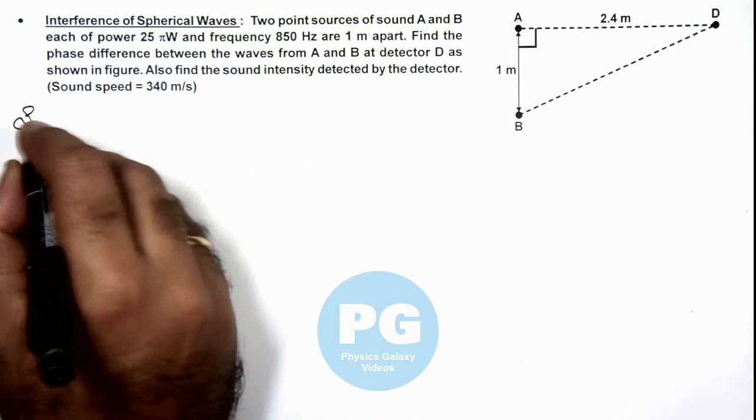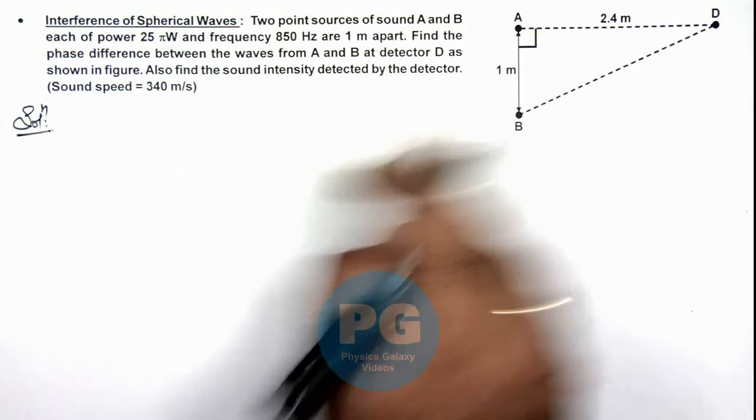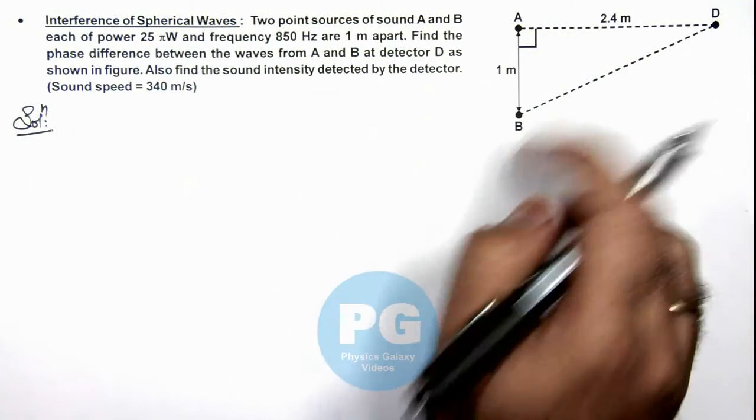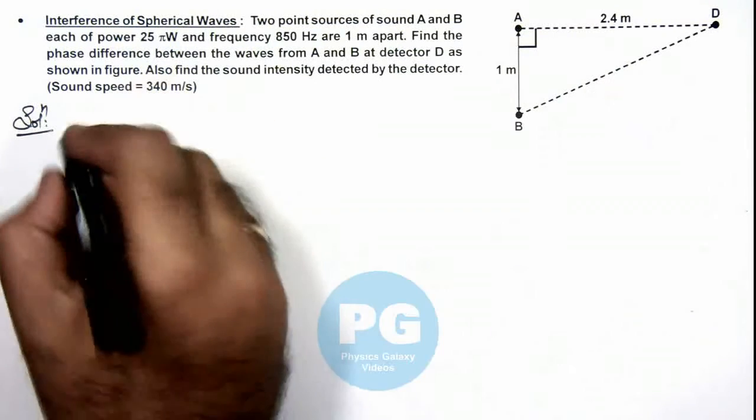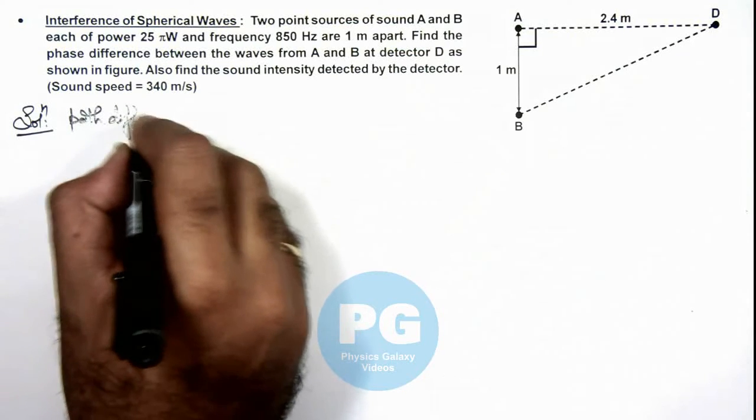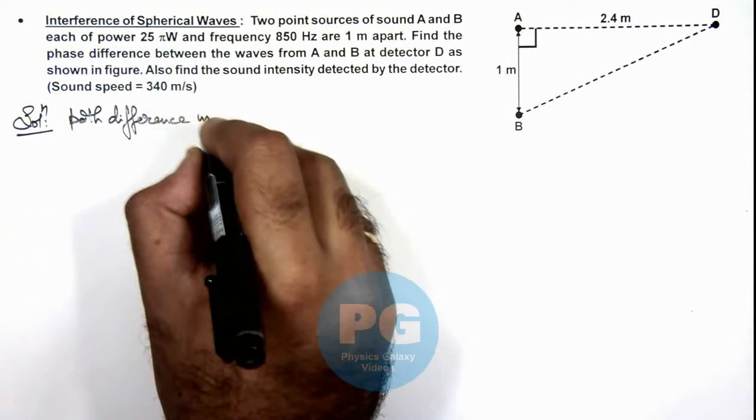As we are given that the two sound sources are at different distances from the detector, we can first find out the path difference. So if we calculate the path difference in waves.